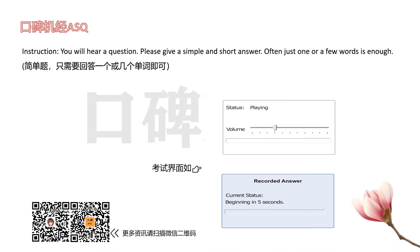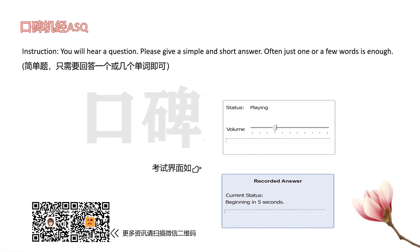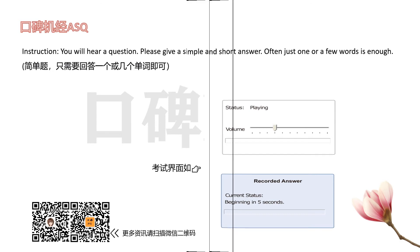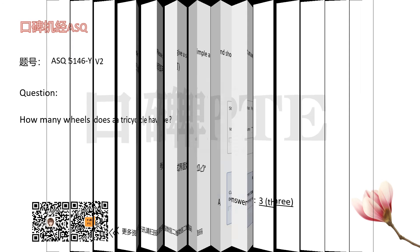On how many sides is a peninsula surrounded by ocean? How many wheels does a tricycle have?